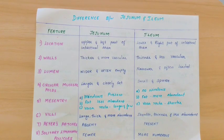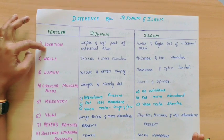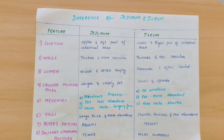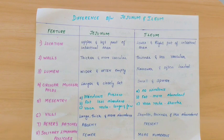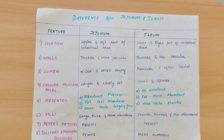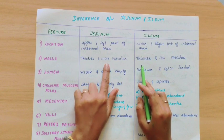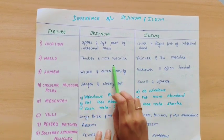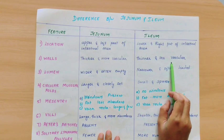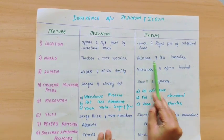Now coming to the differences between jejunum and ileum. The first feature is location. The jejunum is in the upper and left part of the intestinal area, while the ileum is in the lower and right part. Regarding walls, the jejunum is thicker and more vascular, while the ileum is thinner and less vascular.